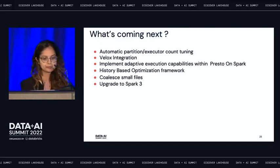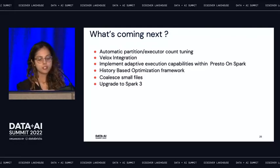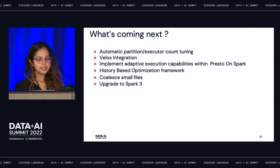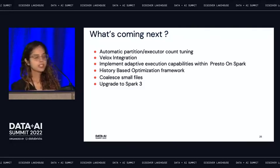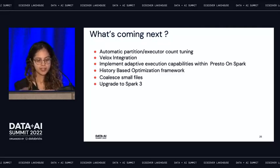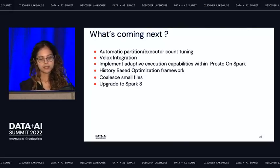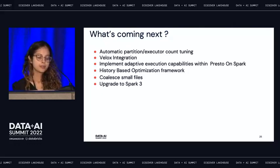What's coming next? When using Presto on Spark today, you have to manually tune parameters like SQL shuffle partitions — called query hash partition count in Presto — and the Spark dynamic allocation max executor. With upcoming features, you won't need to do that. There's also Velox integration, where the Presto team is rewriting their core engine in C++ for better performance. Spark's adaptive execution capabilities are being implemented in Presto, you can coalesce small files, and there's a plan to migrate to Spark 3. The cost-based optimization framework is also being revisited to produce more correct results.